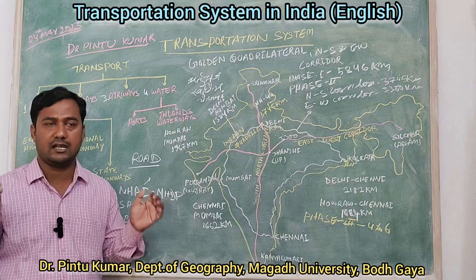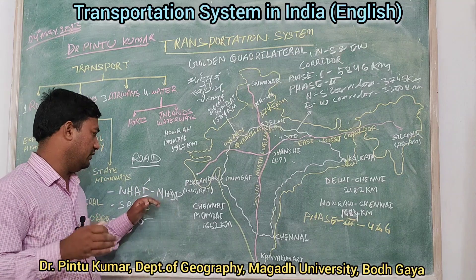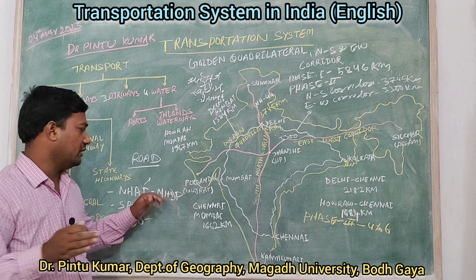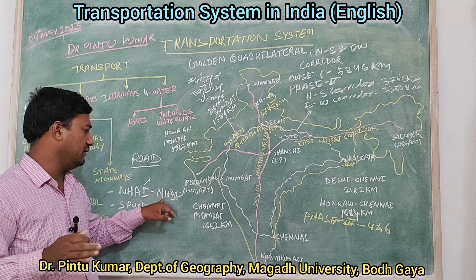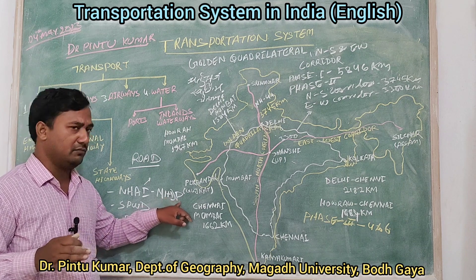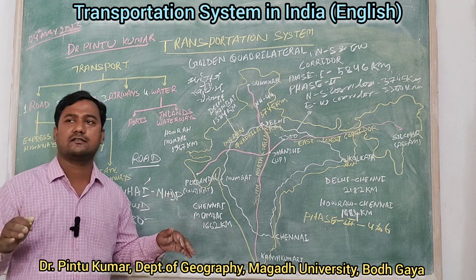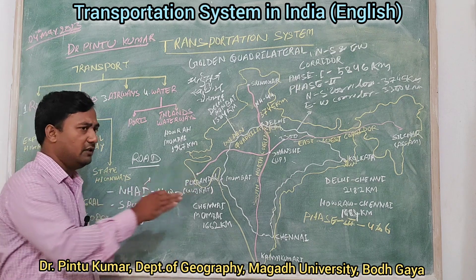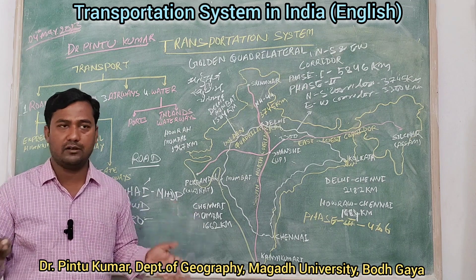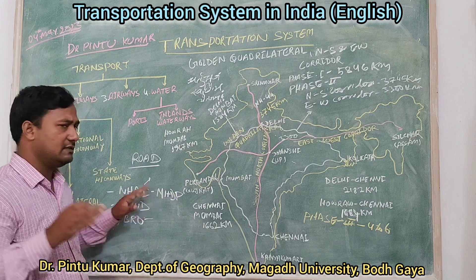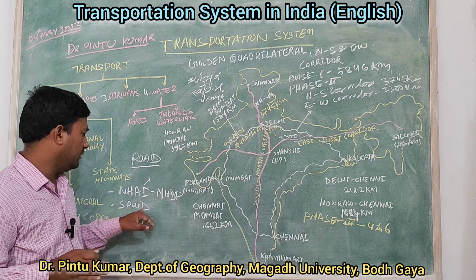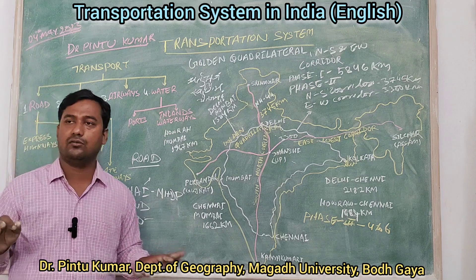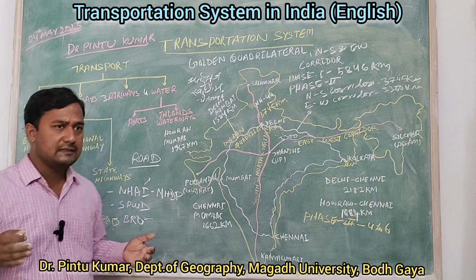The National Highway Authority of India, NHAI, is the most important agency that maintains the whole national highway road network system of India. NHAI provides projects through the National Highway Development Project, NHDP. Another agency is the National Highway and Infrastructure Development Corporation Limited, NHIDCL, which also plays a very important role in national highway development.